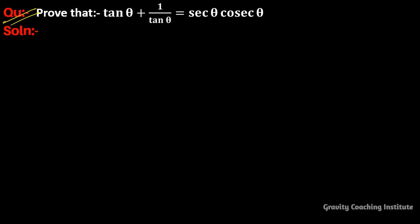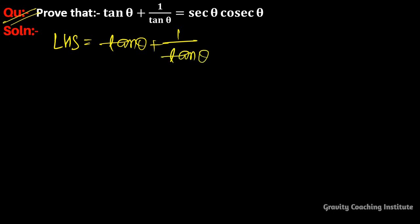Question: prove that tan θ + 1/tan θ = sec θ · cosec θ. Here, LHS is equal to tan θ + 1/tan θ.